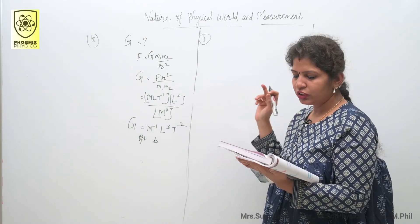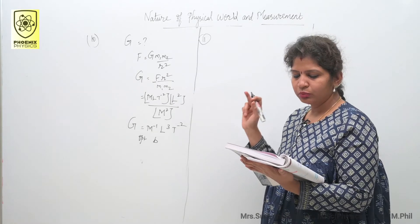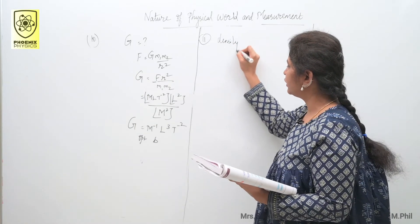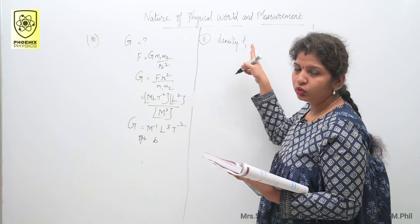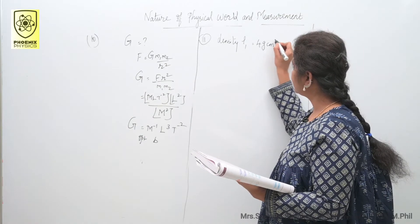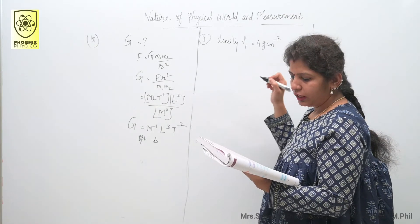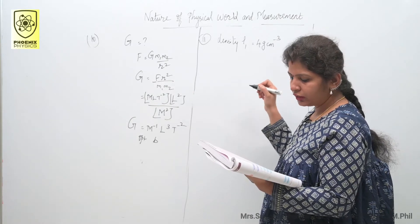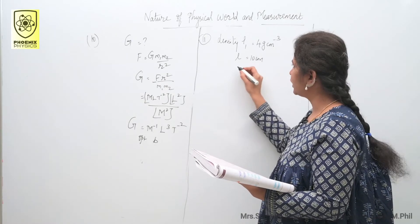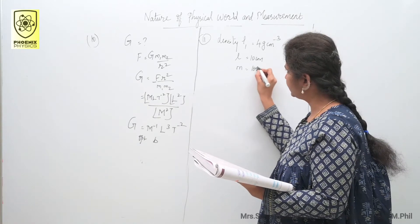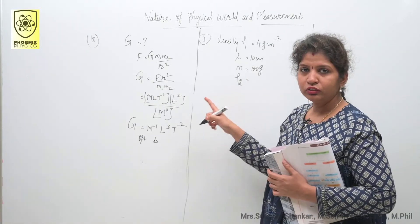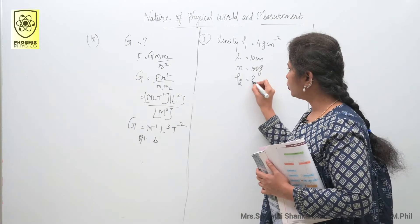Question eleven: the density of a material in the CGS system is 4 g cm⁻³. In a new system where the unit of length is 10 cm and the unit of mass is 100 g, find the value of density. Using N₁U₁ equals N₂U₂, rho₁ is 4 and U₁ is the CGS unit gram per centimeter cube. We need to find rho₂.